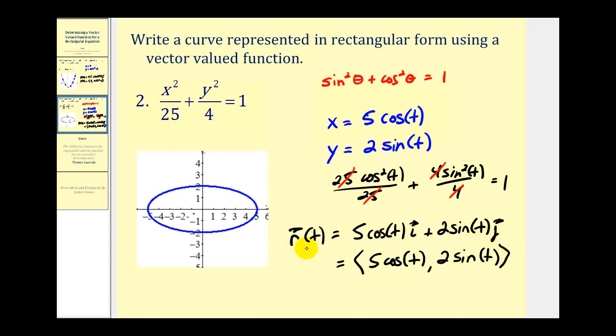However, now that it's a vector-valued function, it does have an orientation. If we let t equal 0, the x component would be 5 and the y component would be 0, so we'd be at this point here. And then at pi over 2, the x component would be 0 and the y component would be 2, so we'd be at here, which means we're graphing this counterclockwise, based upon how we defined the vector-valued function.